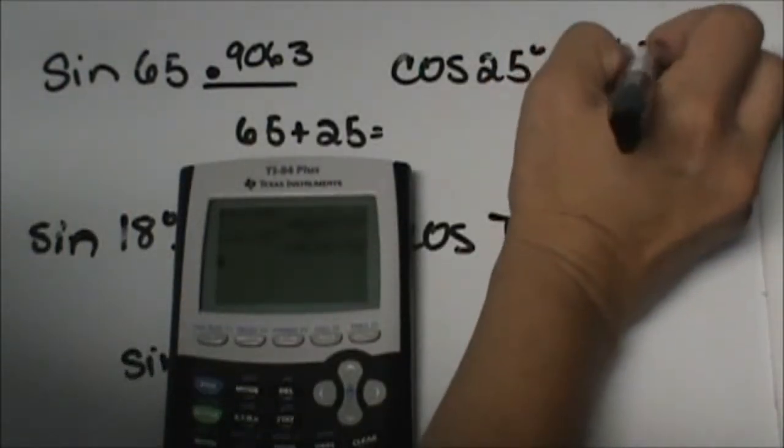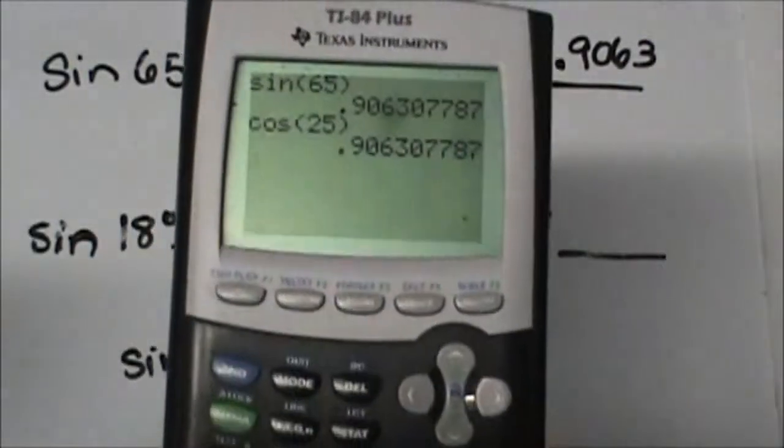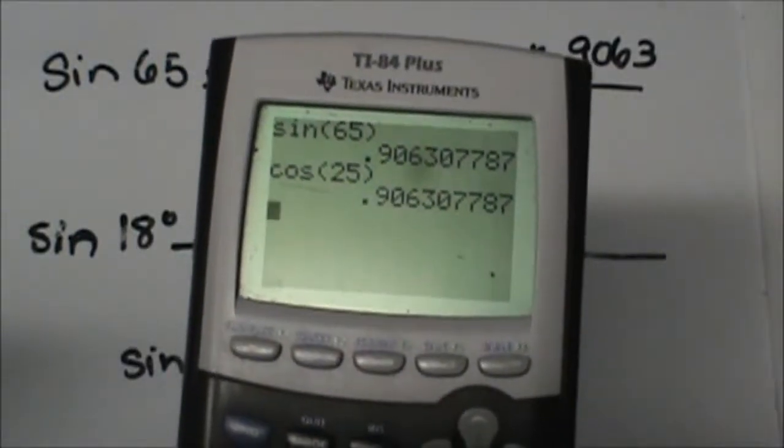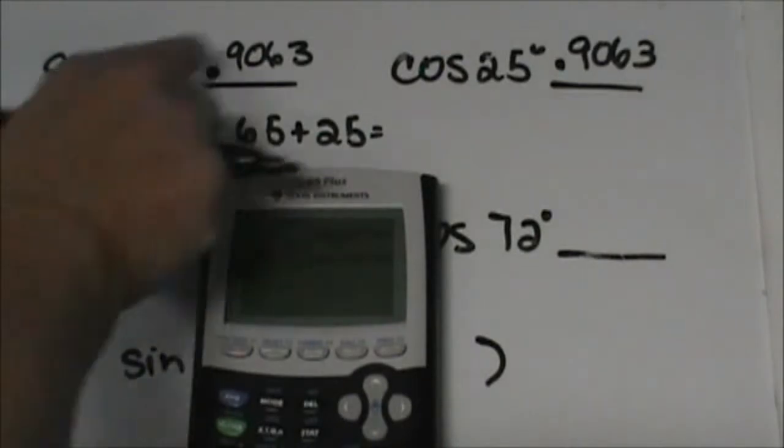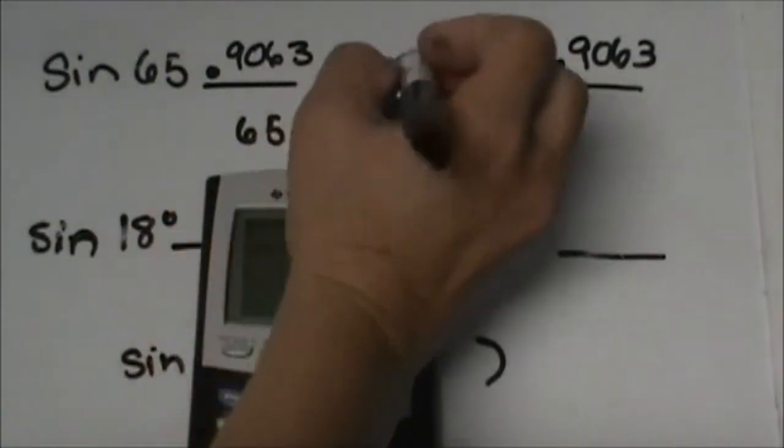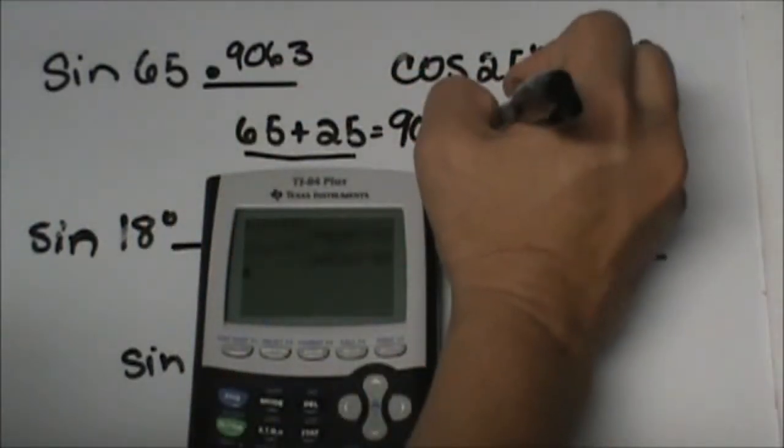Okay, so we've got two different ratios coming out to the same value. Well, let's look at why that might be happening. What do you notice about the two angle measures, 65 and 25? What do those add up to? Well, they add up to 90, so they are complementary.